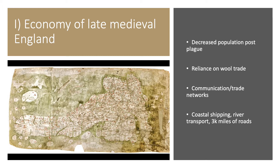England's economy became increasingly reliant on the wool trade, particularly with Flanders — modern Belgium — exporting something like 30,000 sacks of wool every year. Disruptions to that trade would have a negative impact on the English economy. The shift to wool also encouraged some people to replace arable agricultural land with pasture, which would have implications moving forward.